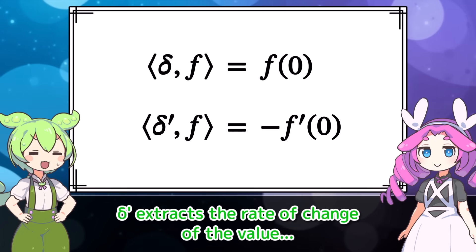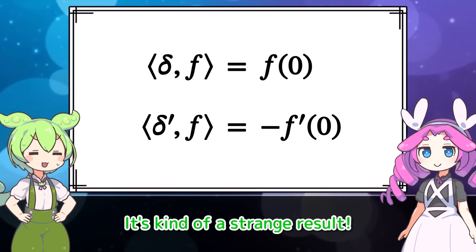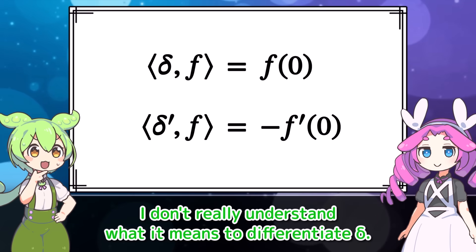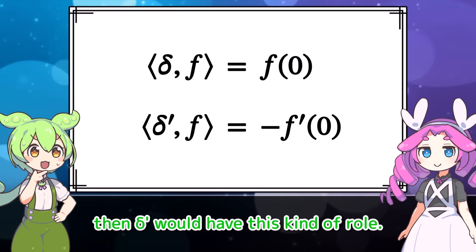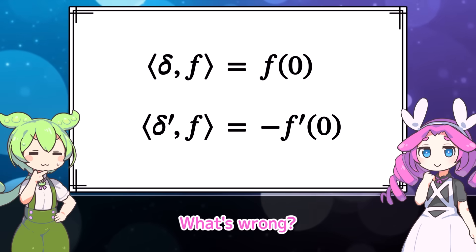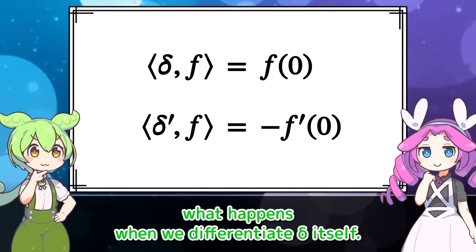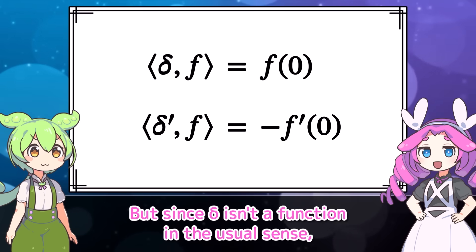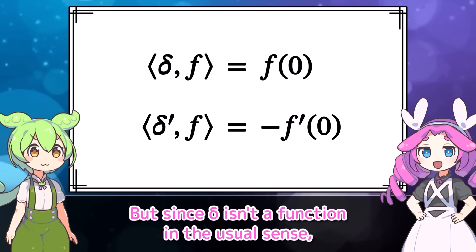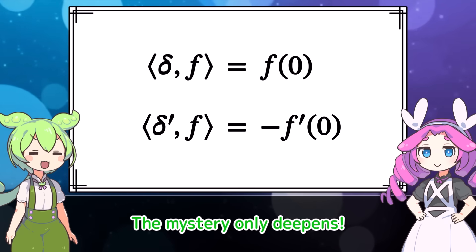To sum up: just like delta extracts the value of f at the origin, delta prime can be thought of as extracting the derivative at the origin — though it comes with a minus sign. While delta extracts the value, delta prime extracts the rate of change of the value. But what we really want to know is, what happens when we differentiate delta itself? Since delta isn't a function in the usual sense, the question of what its derivative looks like may not even be meaningful. The mystery only deepens.